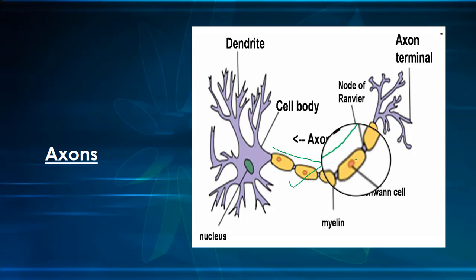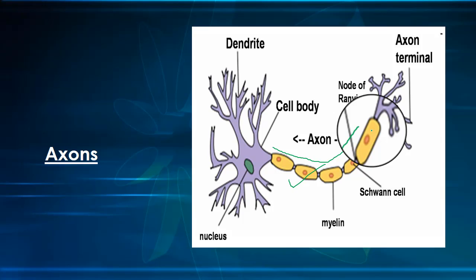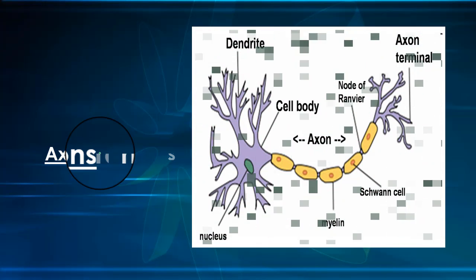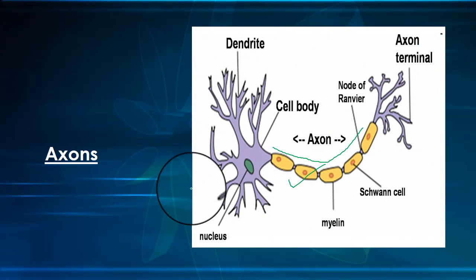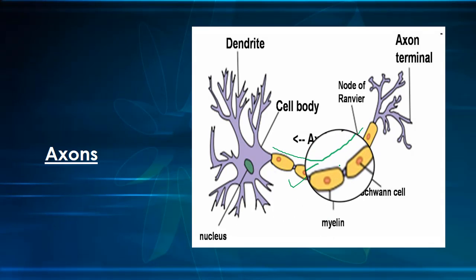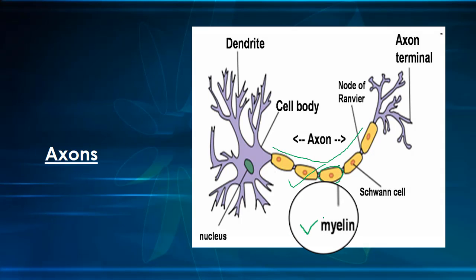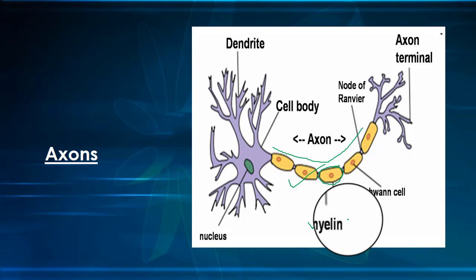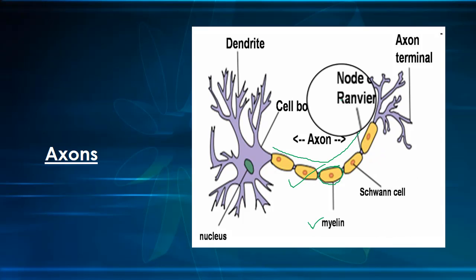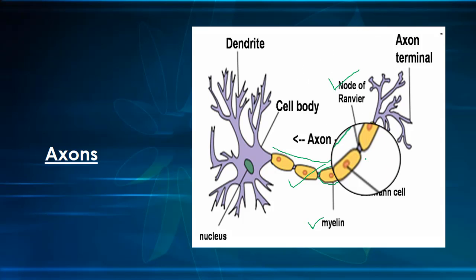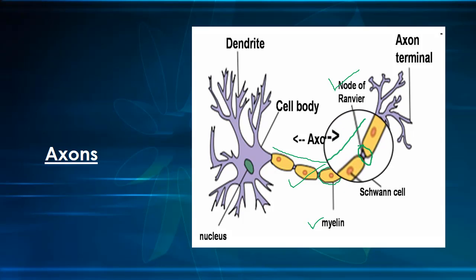Each axon is coated in a myelin sheath, a layer of insulating lipid. Myelin is formed by cells wrapping themselves around the nerve axons — in the central nervous system this is done by oligodendrocyte cells, and in the peripheral nervous system Schwann cells are responsible. There are gaps between the myelin sheath formed by different cells; these gaps are known as nodes of Ranvier, which allow for the saltatory conduction of impulses.